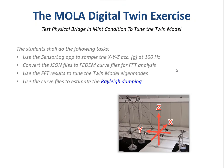The student tasks will be as follows. They shall use the sensor log app to sample the XYZ accelerations at 100 Hz, with outputs in G levels. Then they use Python to convert the JSON files to FEDEM curve files for FFT analysis. As an option, they can also apply the FFT analysis in the Python scripts. Then they use the FFT results to tune the twin model eigenmodes, and use the curve files to estimate the Rayleigh damping.